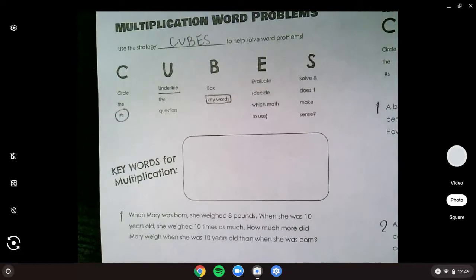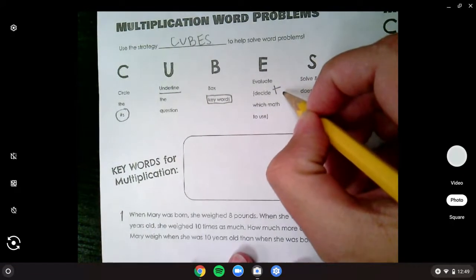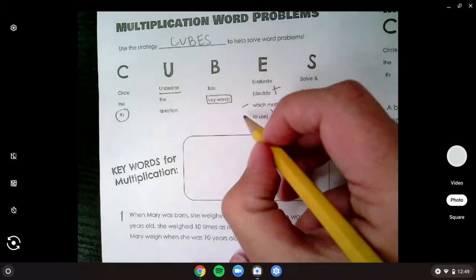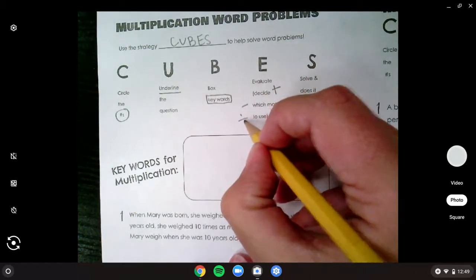The B means we're going to box keywords. The E means evaluate. That's a really fancy way to say decide which math you're going to use. Are we going to add? Are we going to subtract? Are we going to multiply? Or are we going to divide?